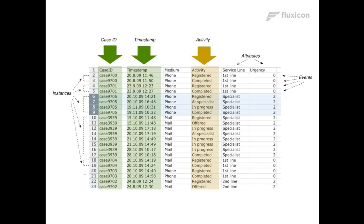With process mining, we have a slightly different meta-model because we are looking at processes — at the data from a process perspective. Every row is not a complete instance; it's just one event, one activity that was performed in the process. To look at a complete process instance, we have to look at several lines because the process consists of multiple steps.